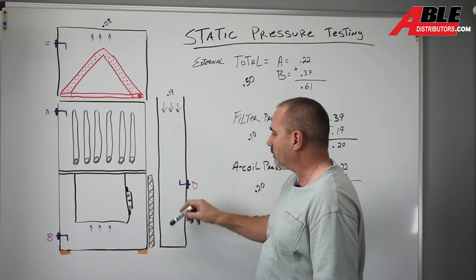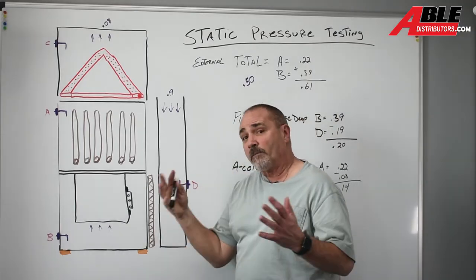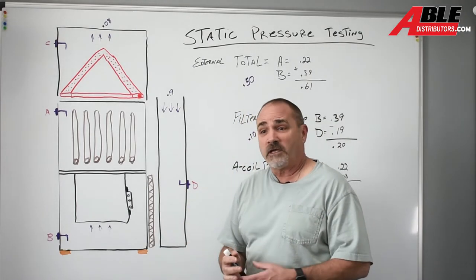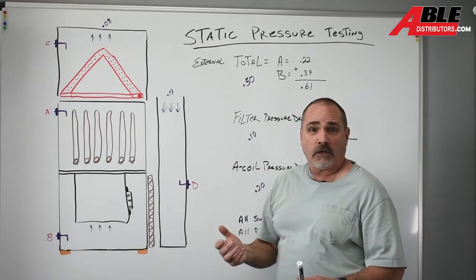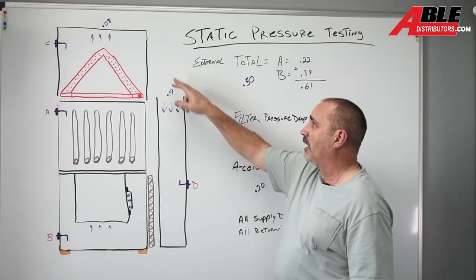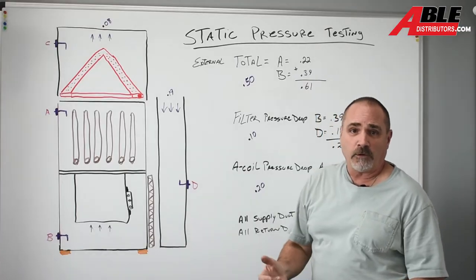So if we were to take that filter and go with a bigger filter or maybe a fiberglass filter, we'd probably drop that in half. And if we added one more return duct, we'd probably get that back down to match the 0.08 and then we'd be good.